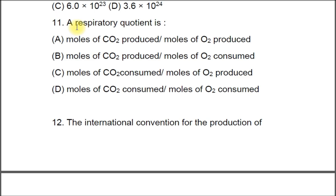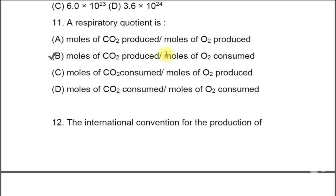Question 11: Respiratory quotient is A) moles of CO2 produced divided by moles of O2 produced, B) moles of CO2 produced divided by moles of O2 consumed, C) moles of CO2 consumed divided by moles of O2 produced, D) moles of CO2 consumed plus moles of O2 consumed. The correct answer is B: moles of CO2 produced divided by moles of O2 consumed.